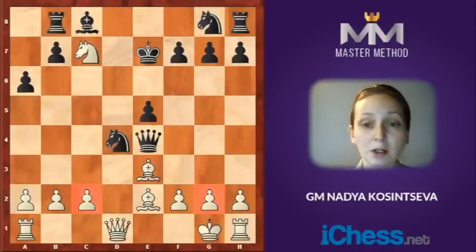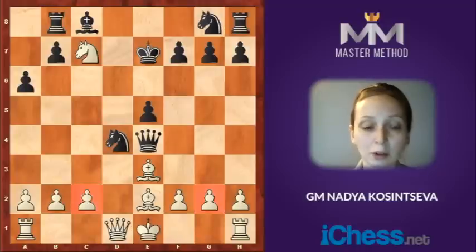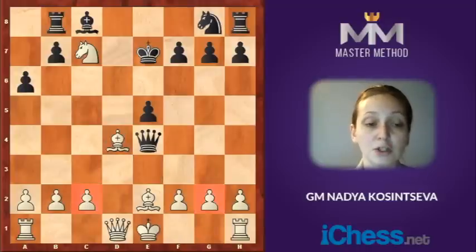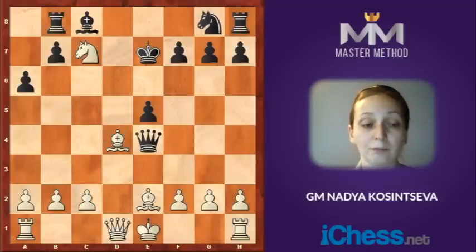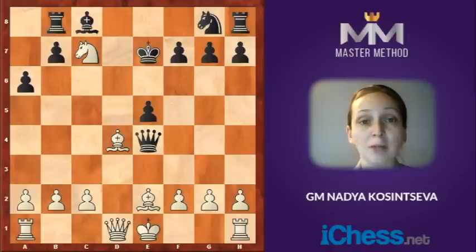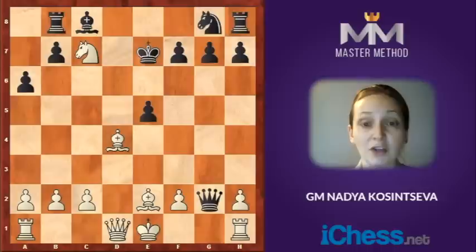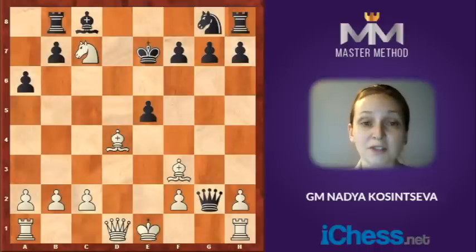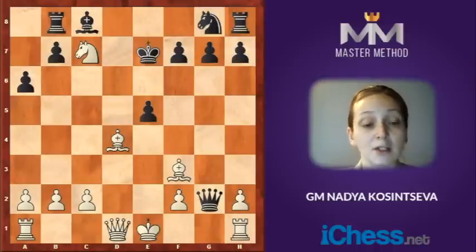The two candidate moves are short castle, where white protects the pawn on g2 and ignores the pawn on c2, and bishop takes on d4, where white eliminates the knight, attacks the pawn on c2, and black has to retake the bishop. Black cannot play queen takes on g2 in view of bishop f3 — white attacks the queen and keeps the extra piece. White is winning.